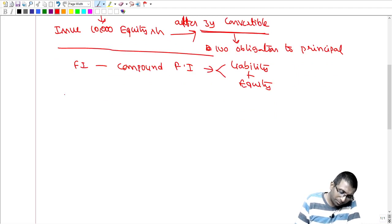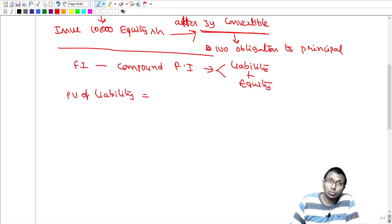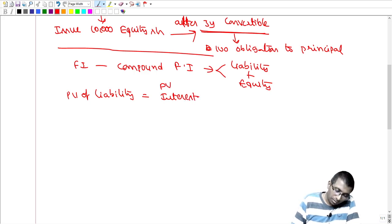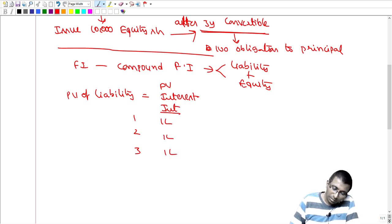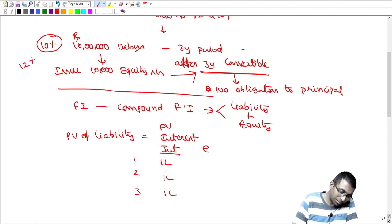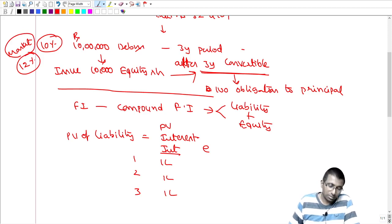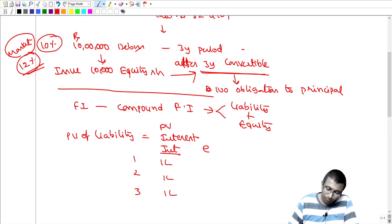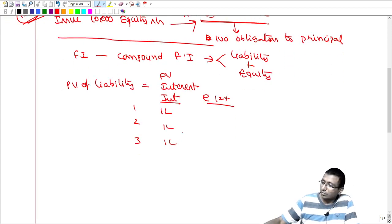So let us bifurcate the amount received. The present value of liability equals the present value of the interest payments. Year 1, Year 2, Year 3 — at 10% on 10 lakh, I'll pay 1 lakh each year. We discount these at the market rate of interest. The market rate for plain debentures without the conversion option is 12%. So we discount the interest cash flows at 12%.